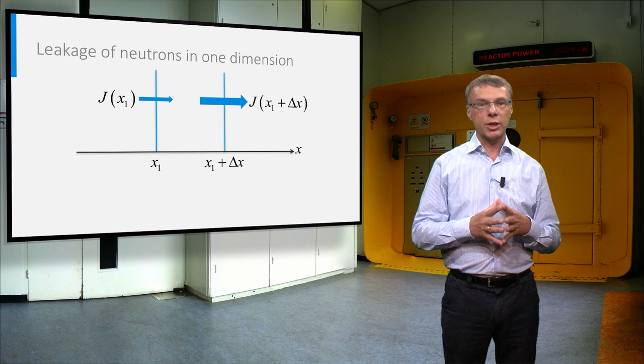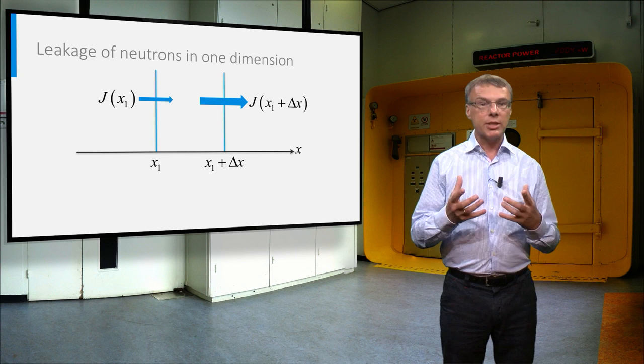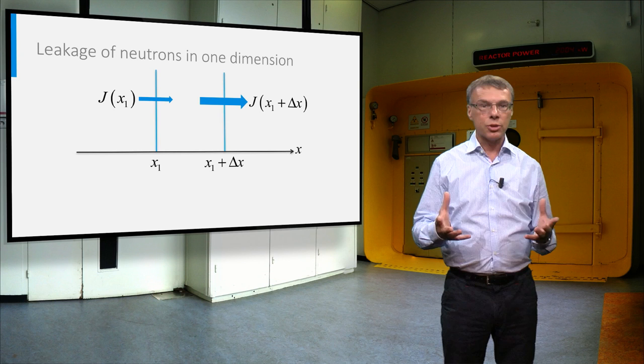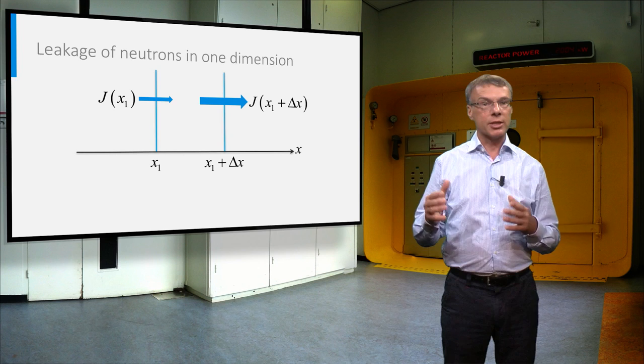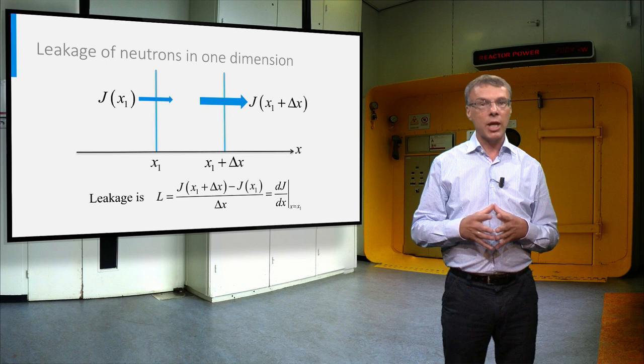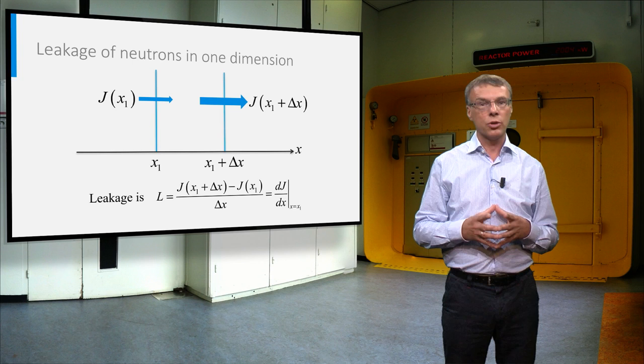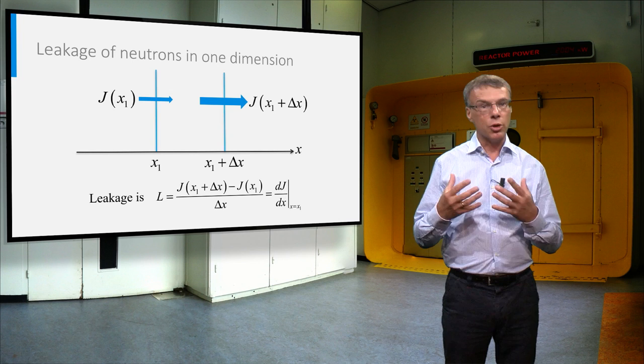Now we will derive an expression for the leakage of neutrons from a volume element. For simplicity, we will derive this expression in one dimension first. Imagine neutrons streaming from left to right. If the neutrons streaming out of an element, delta x, is larger at the right boundary than it is at the left boundary, there is a net positive outflow of neutrons. The leakage per unit size of the element, delta x, is equal to the derivative of the neutron current, called j. On the next slide we will derive a simple expression for the neutron current based on Fick's law.